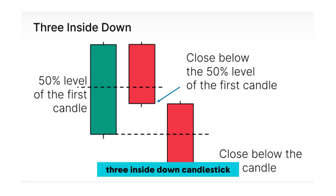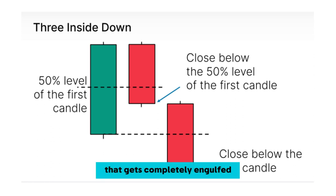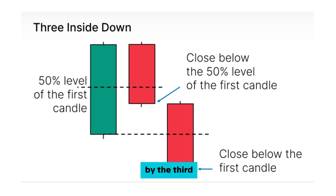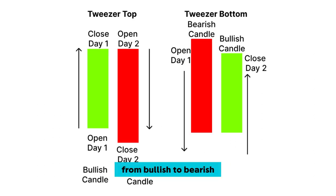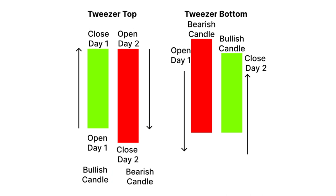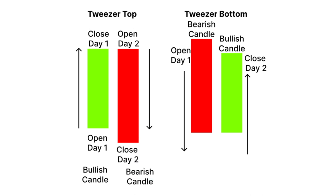Moving on to the three inside down pattern — a bearish reversal signal formed by three candlesticks. It starts with a large bullish candle, followed by a smaller bearish candle, which then gets completely engulfed by the third and larger bearish candle. This pattern suggests a shift in market sentiment from bullish to bearish.